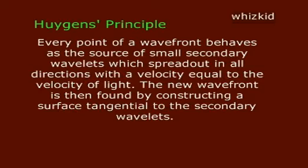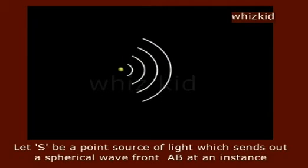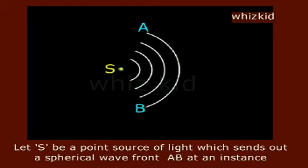The new wave front is then found by constructing a surface tangential to the secondary wavelets. Let S be a point source of light which sends out a spherical wave front, AB, at an instance.